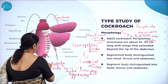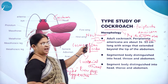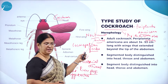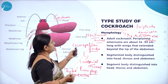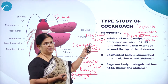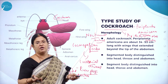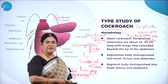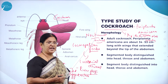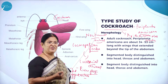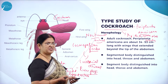This cockroach belongs to phylum Arthropoda, class Insecta. It is a nocturnal animal — very active during night time. It is a cosmopolitan feeder — feeds on almost all types of food. And it is a cursorial animal — runs very fast.